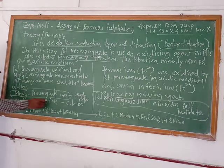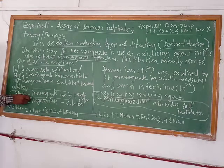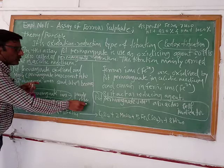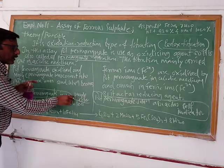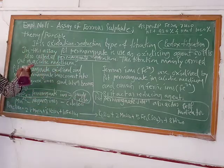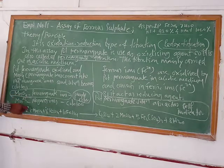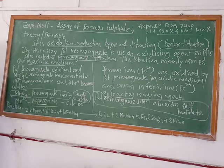These are permanganate ions. You may know that permanganate ions produce a purple color. When the reaction occurs, the permanganate ions get converted and the solution becomes colorless.